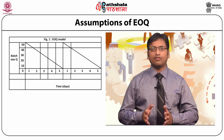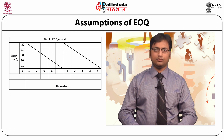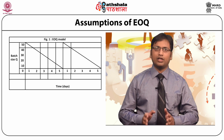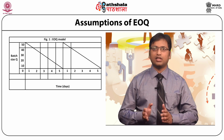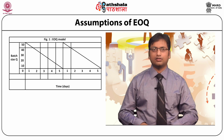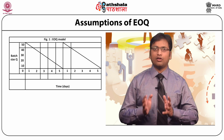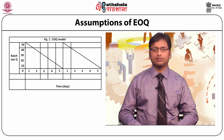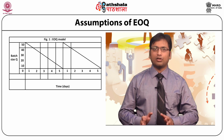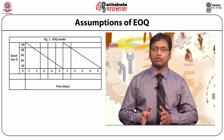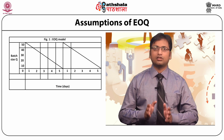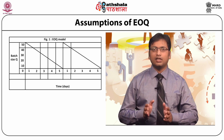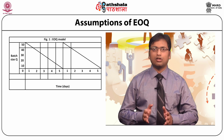Lead time is fixed and constant — the supplier provides a fixed batch size in a fixed and certain time period. The model should be applied only for items whose demand is independent of other items. One of the most important assumptions of the EOQ model is that stock gets replaced instantly, which is why the model is also called an instantaneous replenishment model.